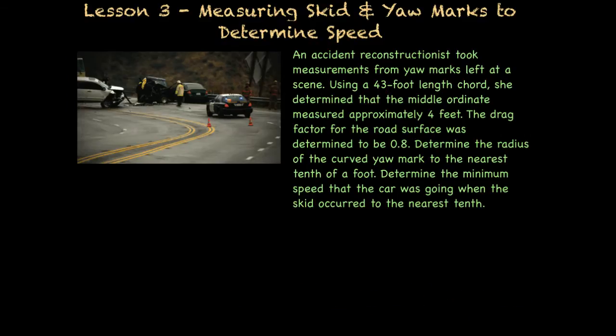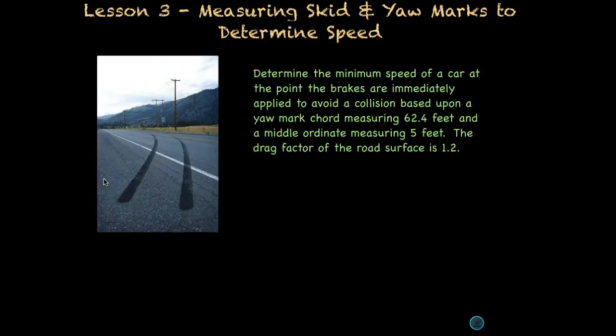Let's look at one final example using yaw marks. In this one, we want to determine the minimum speed of the car at the point the brakes are immediately applied to avoid a collision based on yaw mark chord measuring 62.4 feet. And the middle ordinate was 5 feet. Remember the other thing we need to know is the drag factor on the road surface, which in this case is 1.2. So, pretty slick road. We're actually having less drag in this road, so maybe it's just an icy road at this point.